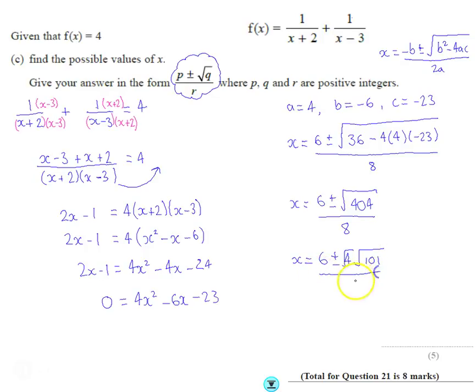And what I'm going to spot is that 404 is really root 4 root 101, all divided by 8. And that is going to be the same as 6 plus or minus 2, square root 4 is 2, square root 101, all divided by 8.